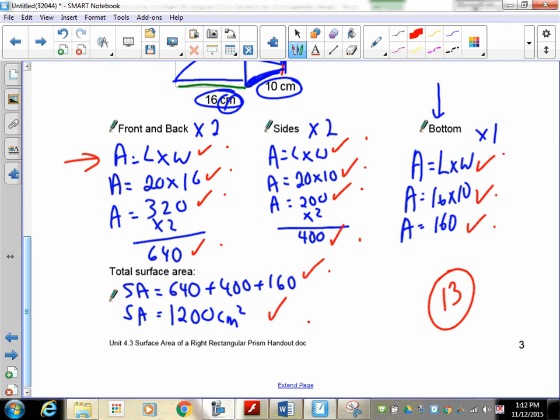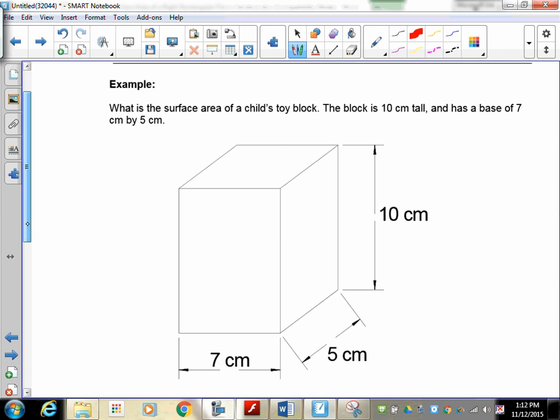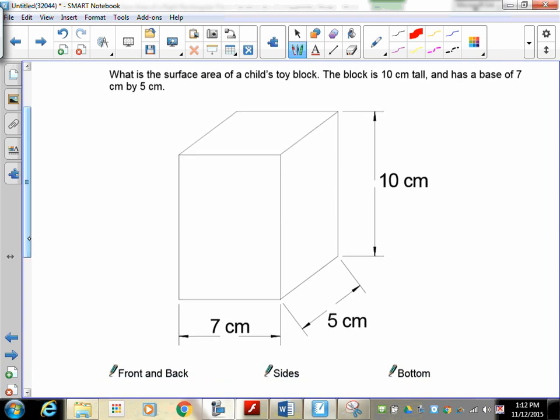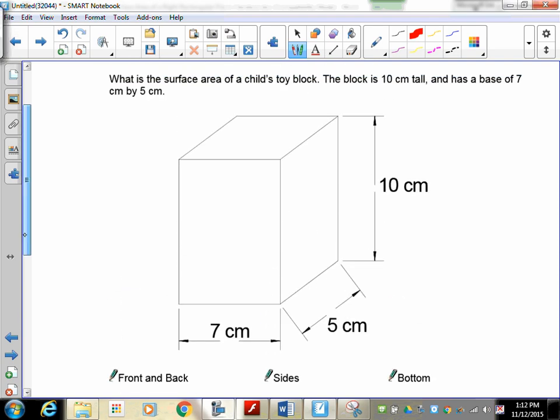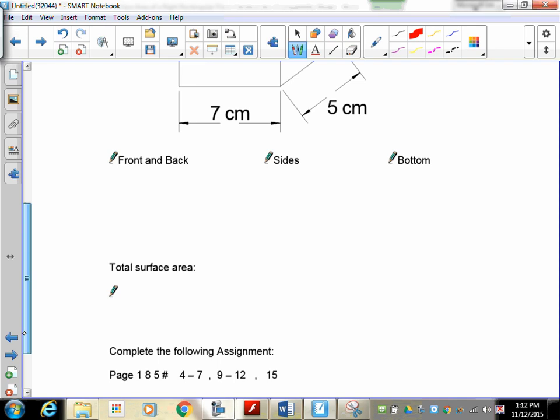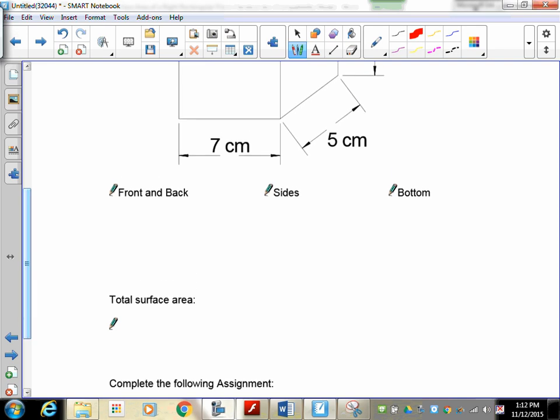Now, here we go. This is a child's block. It is 10 centimeters tall, 5 centimeters wide, and 5, sorry, 5 centimeters deep and 7 centimeters wide. So what I'd like you to do is to pause the recording, find the surface area, and let's see if you can get all 14 marks.